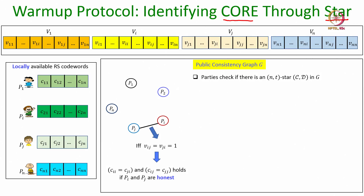The parties make public the response vectors; based on that the consistency graph is constructed — that part remains the same. But now, instead of checking whether a clique of size 2t+1 is present in the consistency graph, parties check if an NT-star is present in the graph. For this, the parties use the star-finding algorithm where the input will be G-complement. The output will be either a star in graph G or the message 'star is not present.'